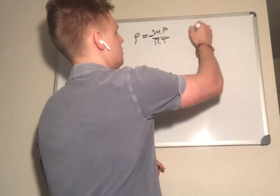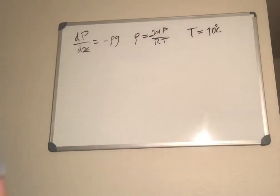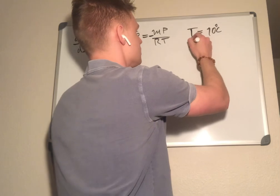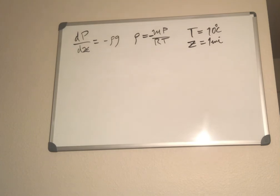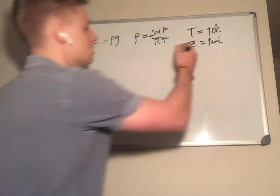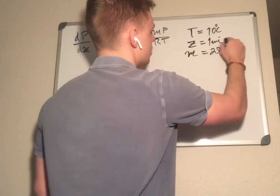T is equal to 10 degrees Celsius. Estimate the ambient pressure in Denver where z is equal to 1 mile relative to sea level. For air, take m is equal to 29 grams per mole.